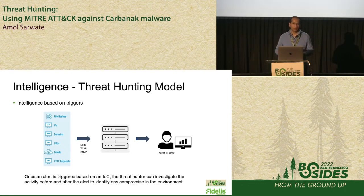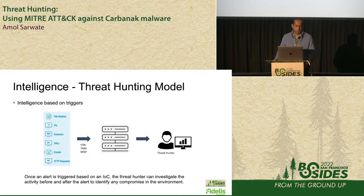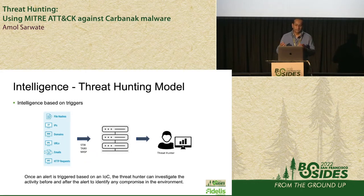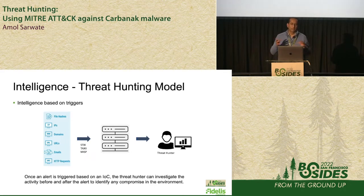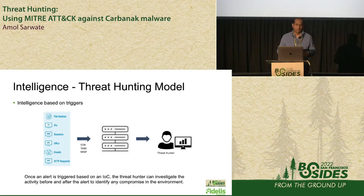Bad IP addresses for where malware does command and control, bad domains, URLs, bad HTTP requests, and so on. This was the first go-to model for threat hunting, where you get these IOCs in your intelligence feeds, and then a threat hunter, once an alert is triggered, can investigate what happened before and what happened after that alert — maybe five or ten minutes before, or even a larger timeframe on that particular box.